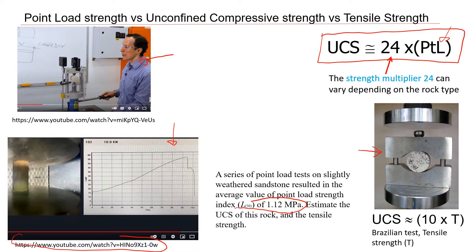This other formula relates UCS with tensile strength. An important thing to note is that these are estimations — not exact values. They will just give you some idea about the strength. It's always better to conduct each test and get the actual values. But if you don't have the equipment, or the budget, or you just want a quick estimate, then you can use these correlations.